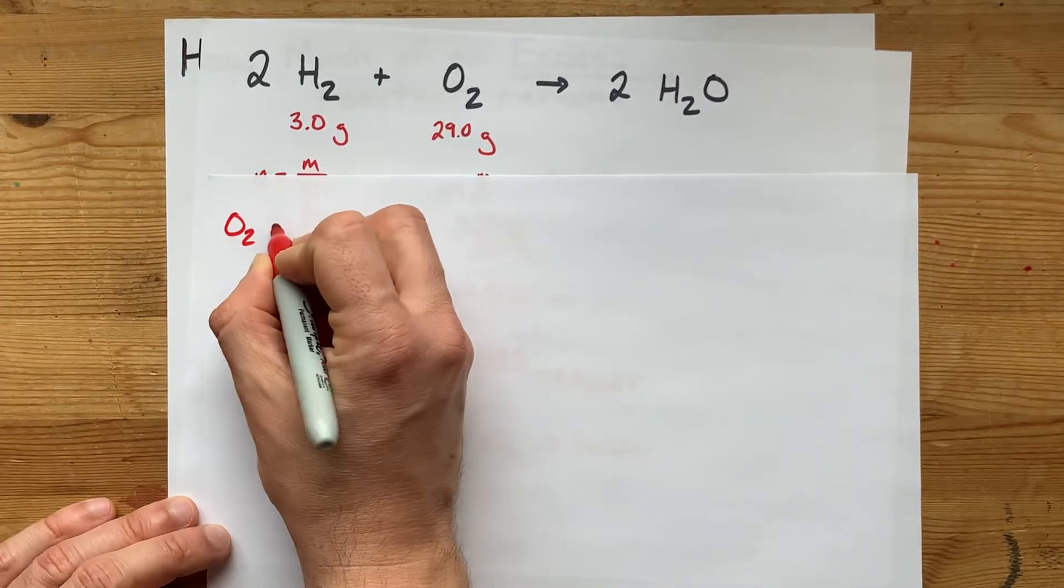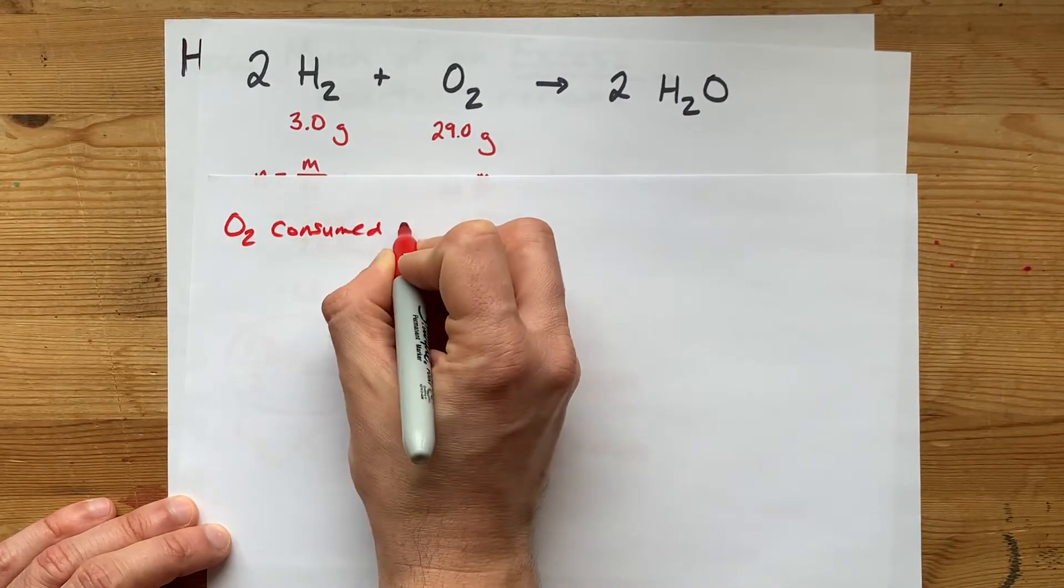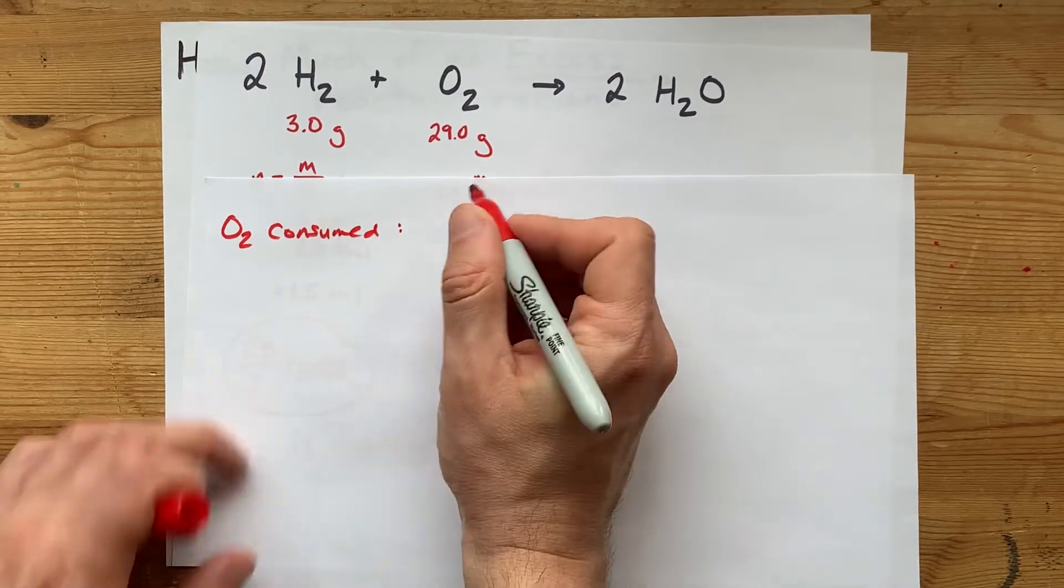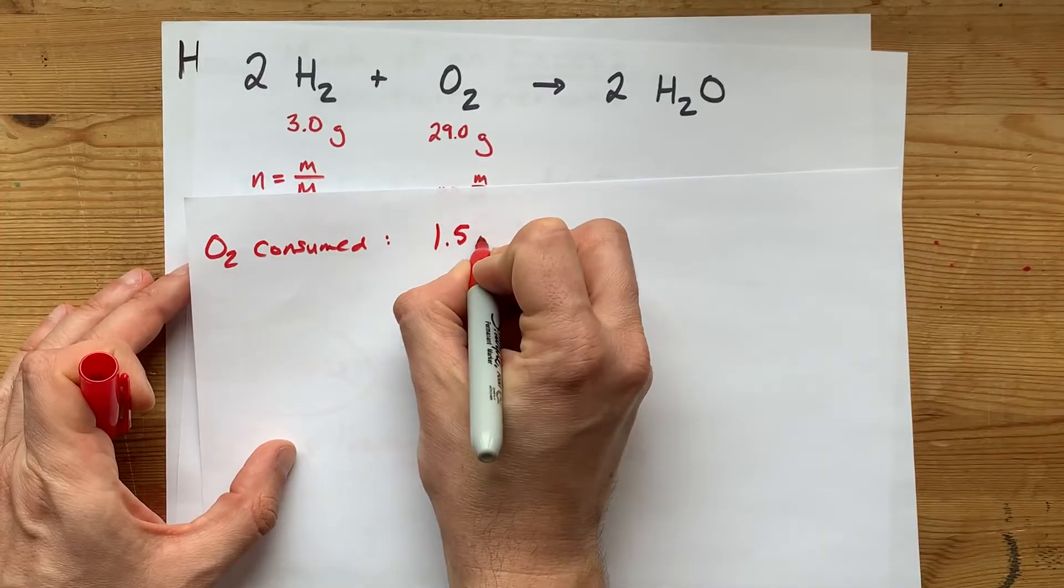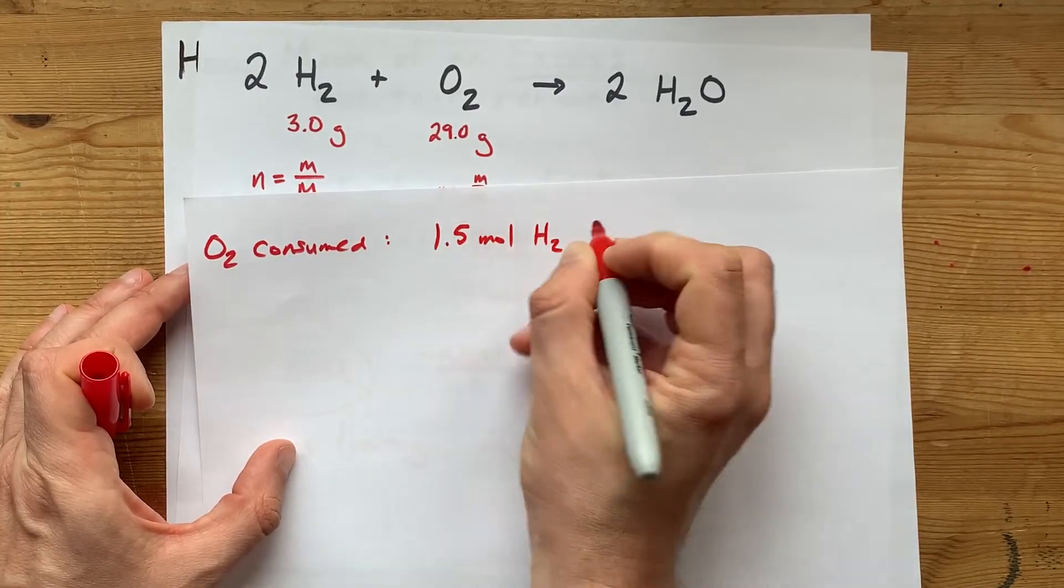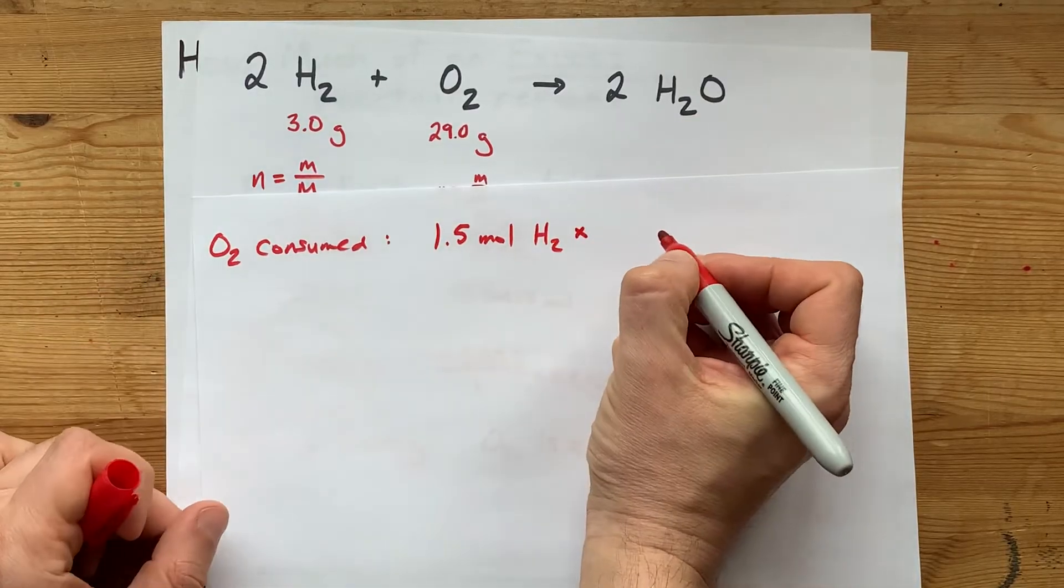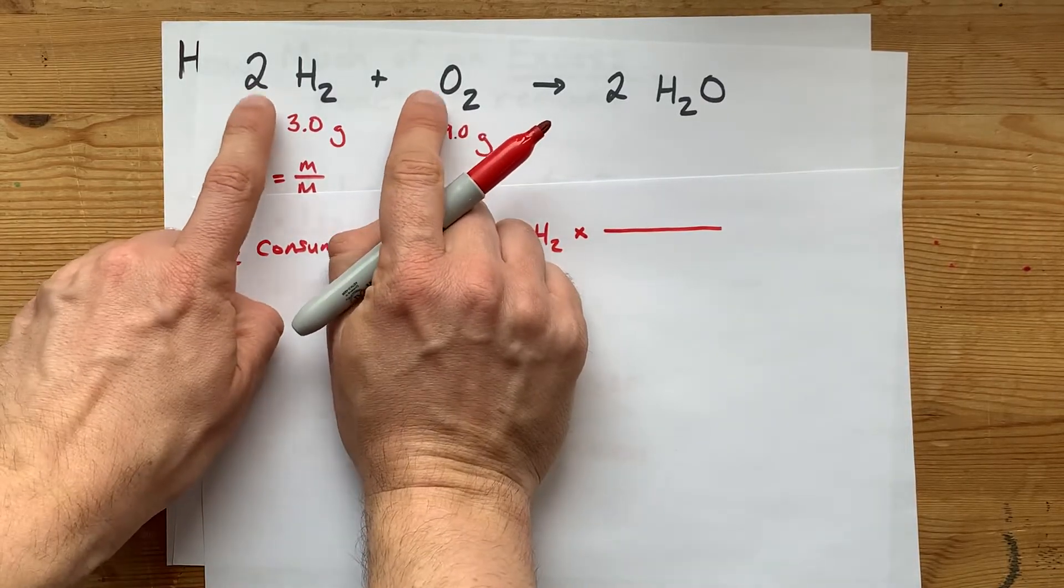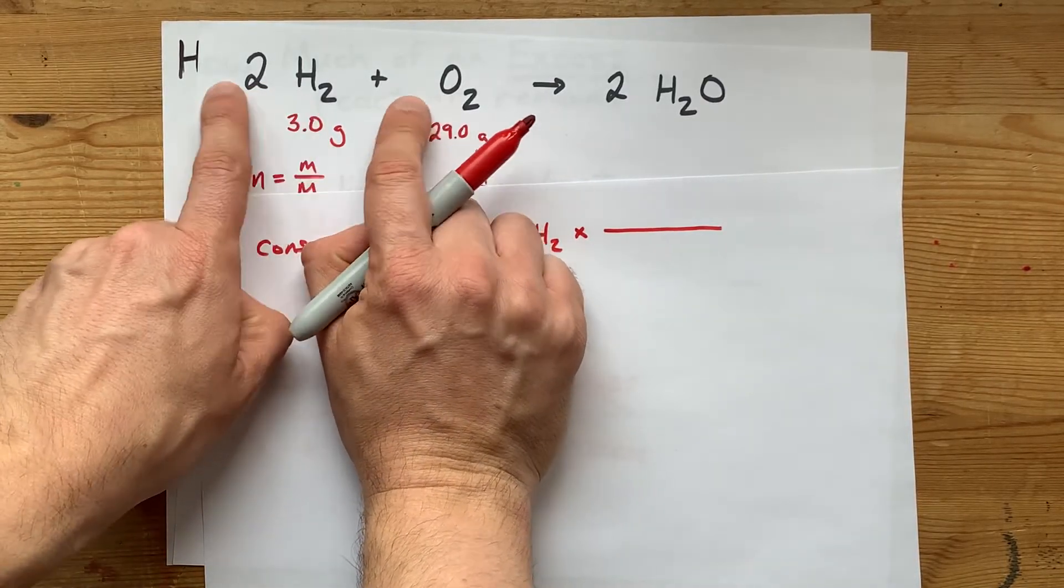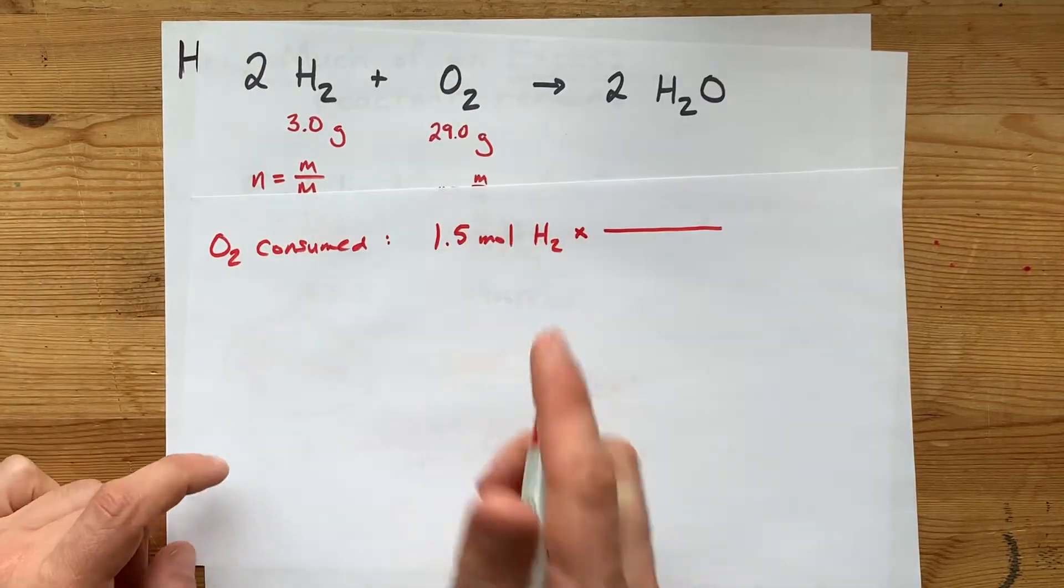So, O2 consumed, this is how much is getting used. We know that we've got to use up 1.5 moles of the H2. And then we're going to use a mole ratio. That's multiplying by the numbers or the coefficients in front of each of the compounds in the balanced chemical equation.